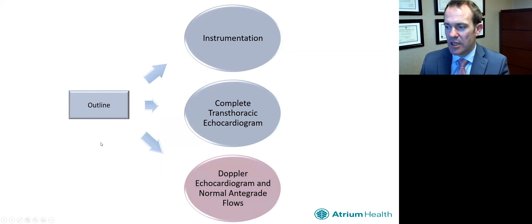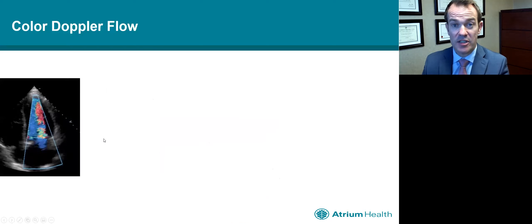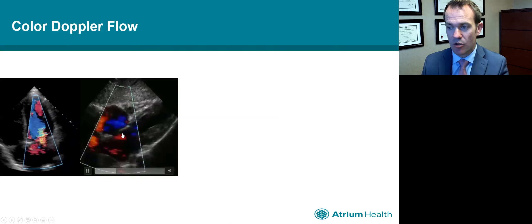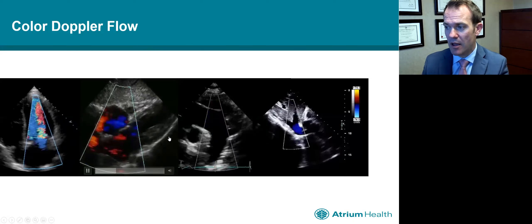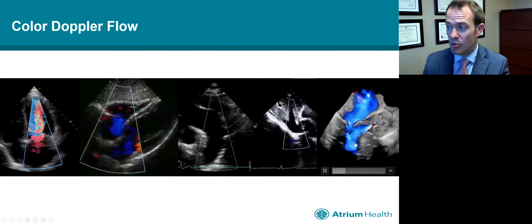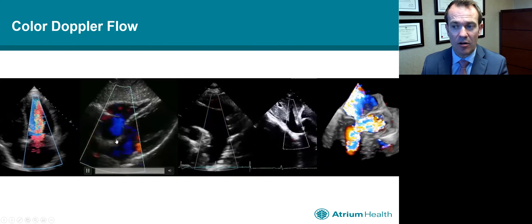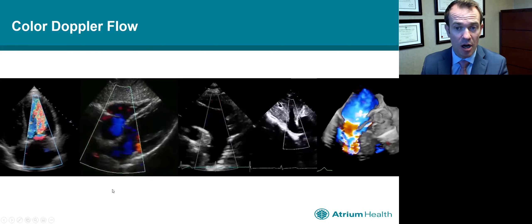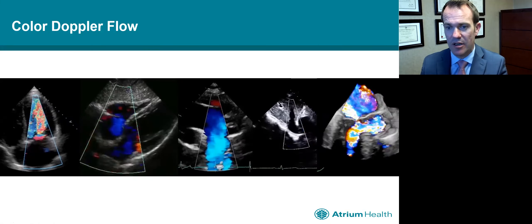Now let's talk about the Doppler echocardiogram and normal antegrade flows. We're using Doppler in multiple ways: color Doppler to look at valve flow for regurgitation or stenosis, to look for shunts, for flow in the great vessels, and for flow in the veins. We can also use 3D to get spectacular images that better define where flow is coming from and to calculate things like 3D vena contracta.